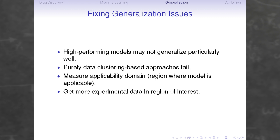There are a variety of ways proposed to deal with generalization issues. One hypothesis is that the issue is with data clustering — clustering of molecules that allows algorithms to get away with just memorizing those clusters. The solution would be to eliminate those clusters, but it turns out that doing so also eliminates the ability of models to learn, so that's not helpful. The approach I prefer is to measure the applicability domain — the domain where your model is actually capable of making predictions — so you know where your model is and is not applicable. The best option is, if you're interested in a particular region of chemical space, to get more data about that region and build a model specifically for it.